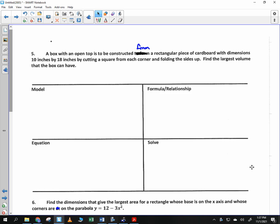A box with an open top, just like I constructed here in front of you, is to be formed from a rectangular piece of cardboard with dimensions 10 by 18. We're going to cut a square from each corner and fold up the sides. So, no top to it. Find the largest volume that the box can have.